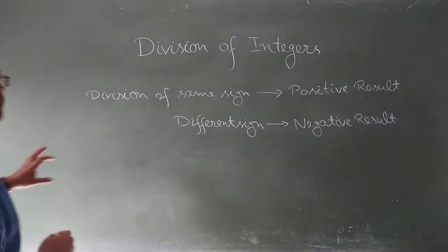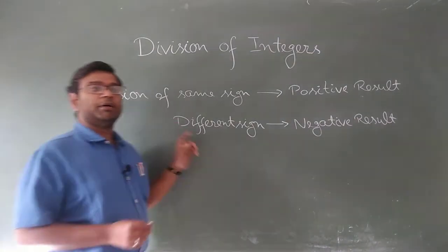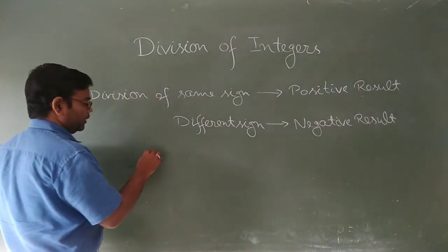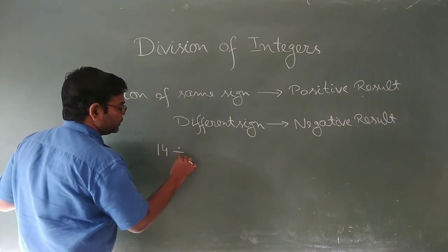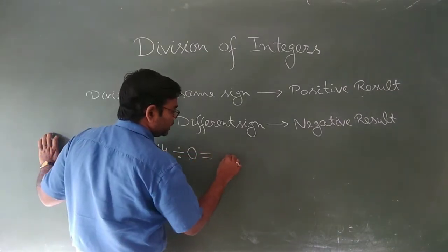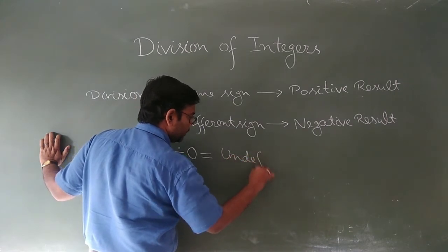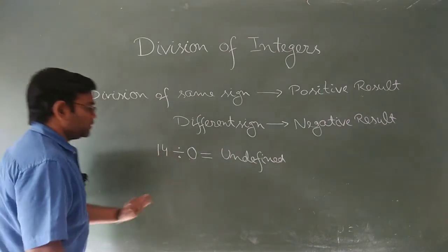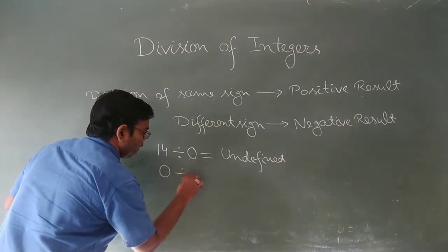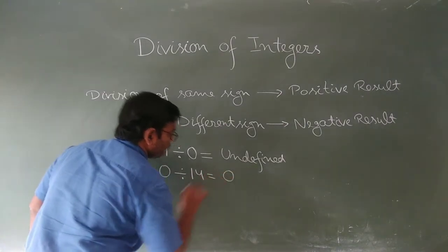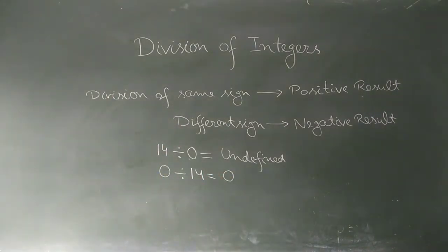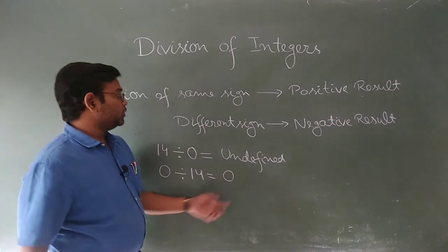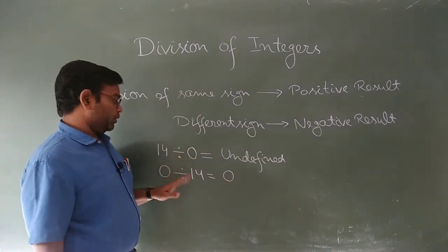One more thing: if we divide any integer by zero, it gives an undefined result. For example, 14 divided by zero is undefined — it is not defined. And if we reverse this, zero divided by any integer gives zero as a result. Whatever the integer is, positive or negative, the result is always zero.